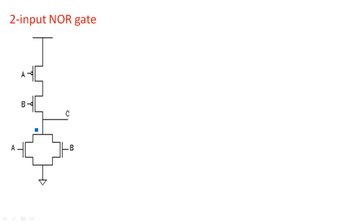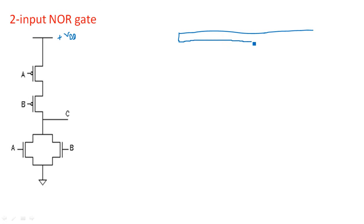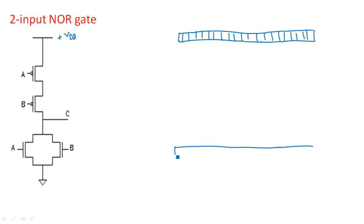For the two-input NOR gate, inputs A and B in the PMOS section are in series, whereas the two NMOS transistors in the N-type realization are in parallel — which is the opposite case with respect to the NAND gate. Here we have VDD at the top and VSS or ground at the bottom. Take metal wire — same as we used in the previous layout diagram for the NAND gate — and draw metal one wires for VDD and VSS power supply.